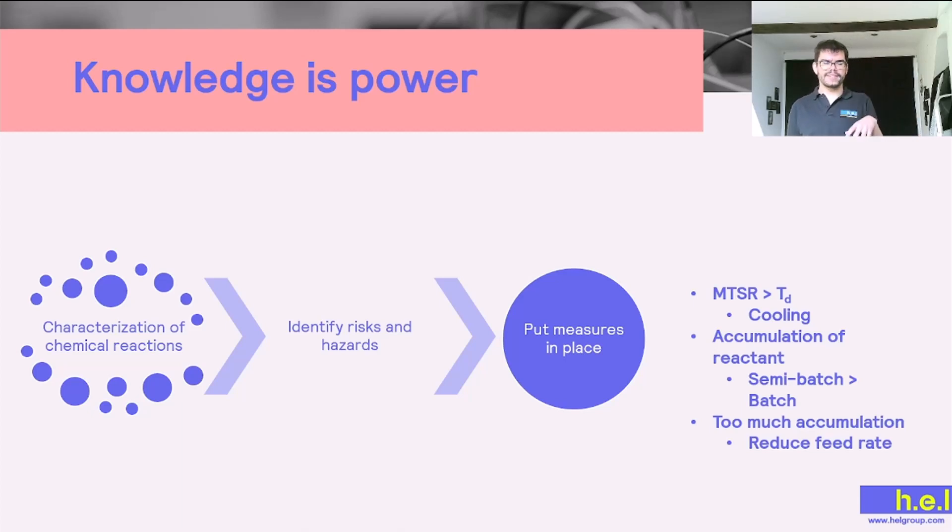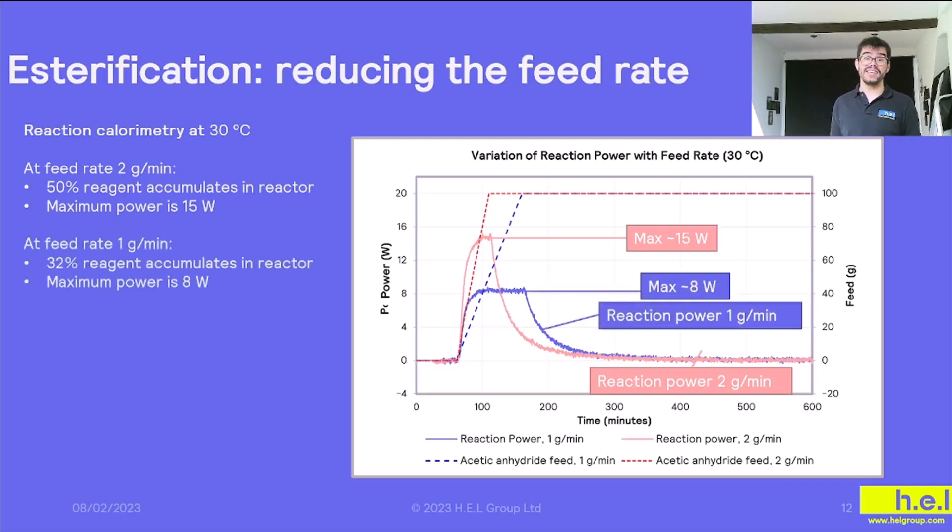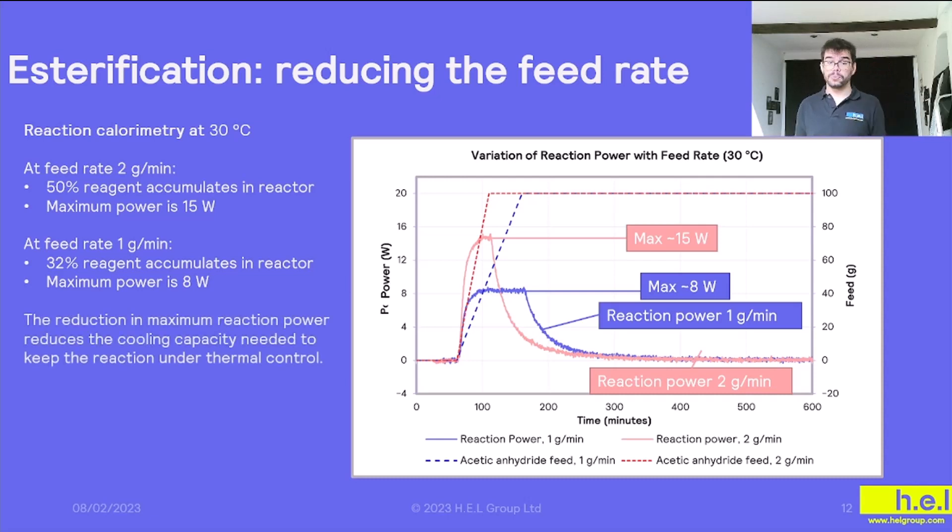In which the pink line is the example that we had before, and we observed that in order to keep our reactor at a temperature of 30 degrees, actually we need to supply 15 watts of cooling, and this was when we were supplying two grams per minute. And then we can think, maybe that kind of cooling is too much for us, we can't cope with it, so let's see what happens if we reduce the feed rate. Instead of using two grams, we're going to use one gram, and that's going to be the blue line. And actually we see that we don't need to supply as much cooling, and instead of 15 watts, it's going to be just 8 watts. So actually, calorimetry can teach us how to calculate and how to address these issues.